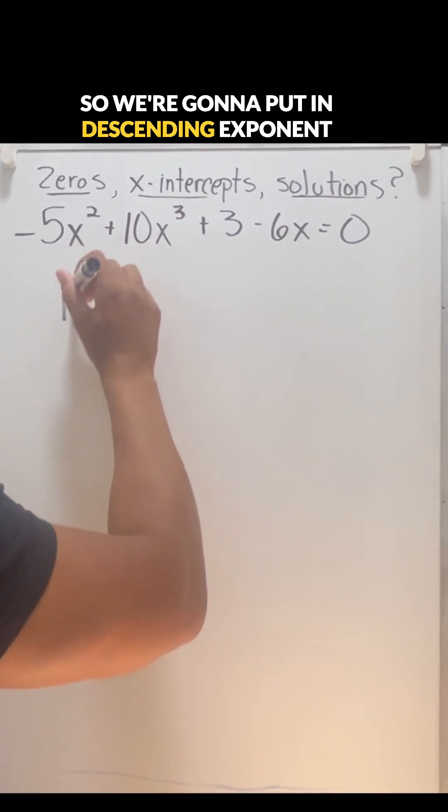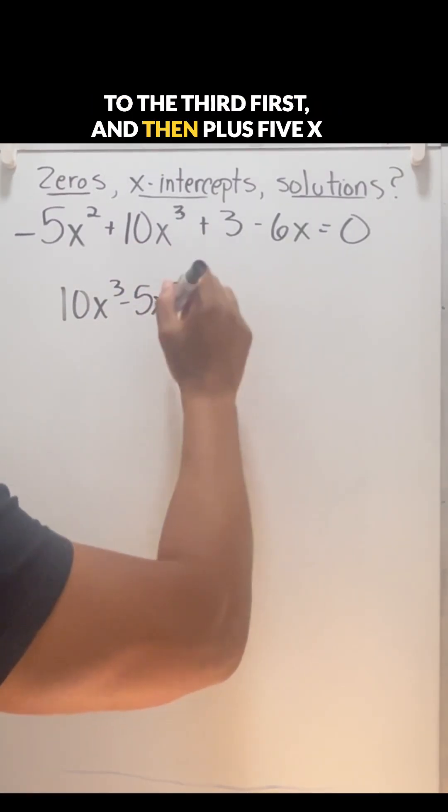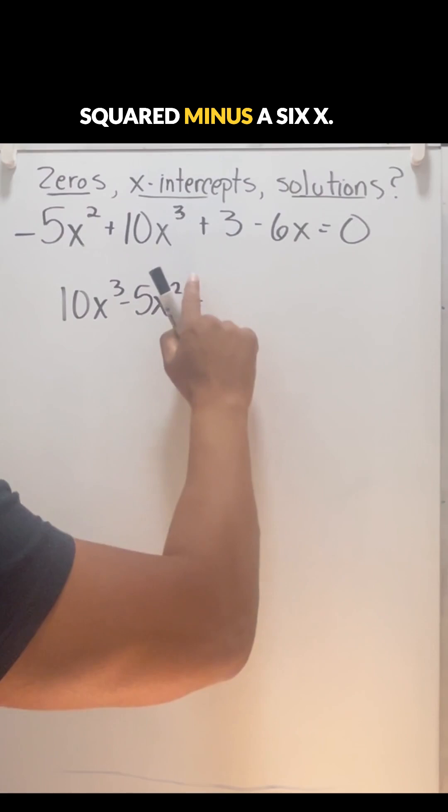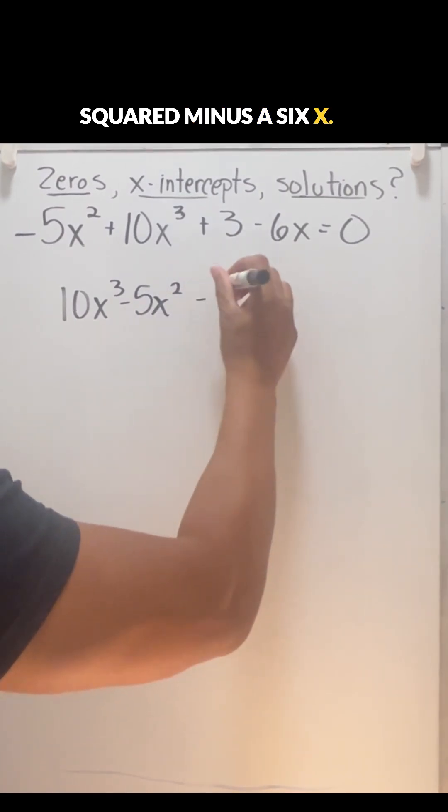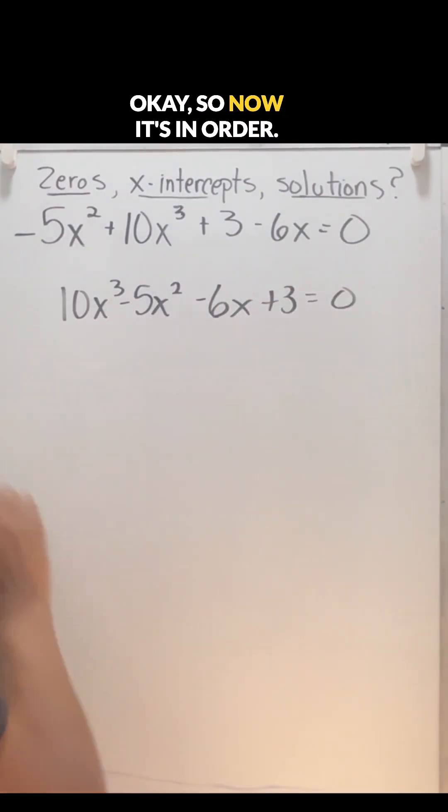So we're going to put it in descending exponent order. That means I'm going to put my x to the third first, and then plus five x squared, minus six x. The sign follows it, plus three equals zero. Okay, so now it's in order.